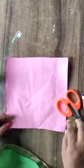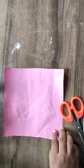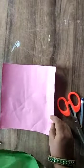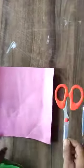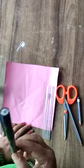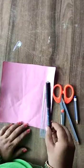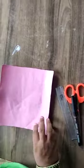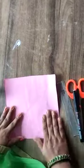Students, to make a paper kite, we need a square shape paper, glue, scissor, pencil, one scale, and black color or marker. So let's start. See carefully.